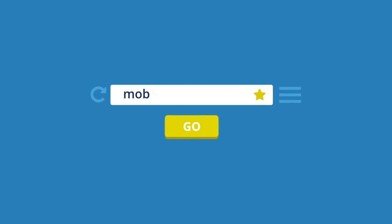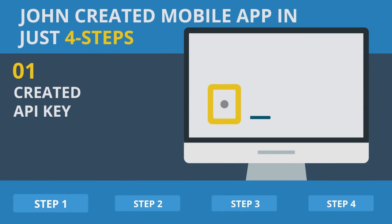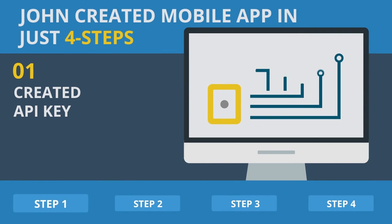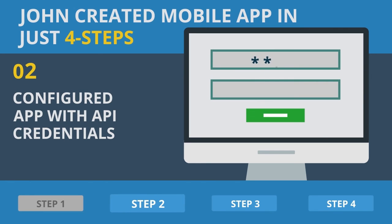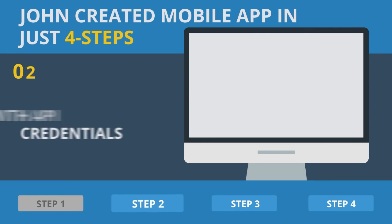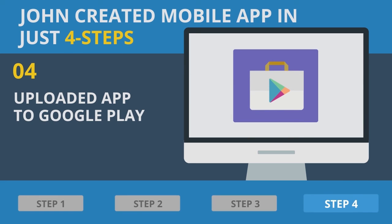You can also make this app through Mobicle.com. John created the mobile app in 4 steps: first, create an API key; then configure the app with API credentials; then customize the app and export the APK; finally, upload the app to Google Play.